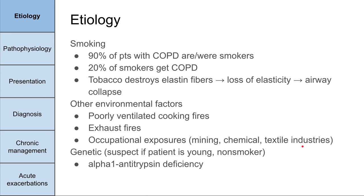There is a genetic cause of COPD as well, called alpha-1 antitrypsin deficiency. You might suspect this in a patient who presents with these signs and symptoms but is young, has never smoked, or has a family history of COPD in a young non-smoker. Alpha-1 antitrypsin deficiency also affects the liver, so you can present with hepatitis. It's worth looking into in those cases.